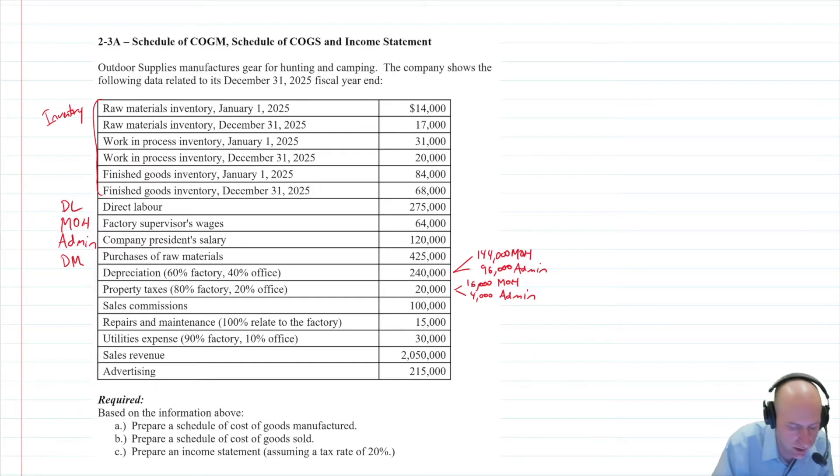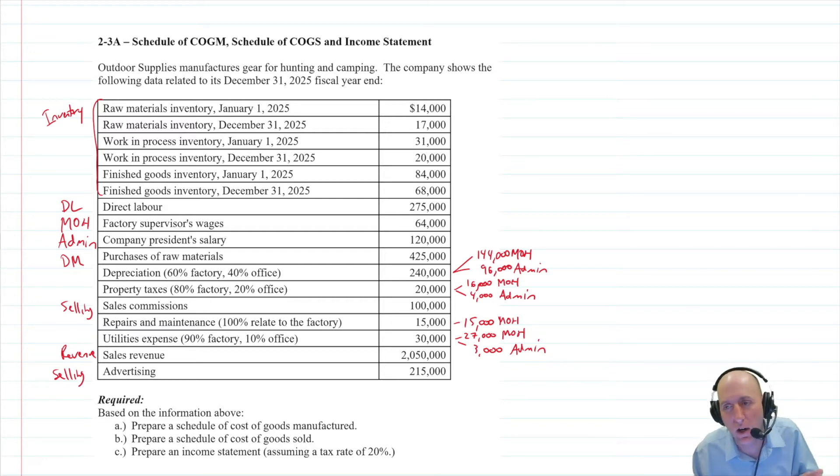Sales commissions, those don't happen in the factory, that's a selling cost. Repairs and maintenance, 100% relate to the factory, so it is all MOH. Utilities expense, 90% factory, 10% office. How many dollars worth of light went into our outdoor gear? Hard to know. So that's why it is an indirect factory cost. $27,000 is overhead, our indirect factory cost. $3,000 relates to the office, so $3,000 is administrative. Sales revenue, 2 million, this is a revenue item that will belong on the income statement. And advertising is a selling cost. So we've identified all of our accounts.